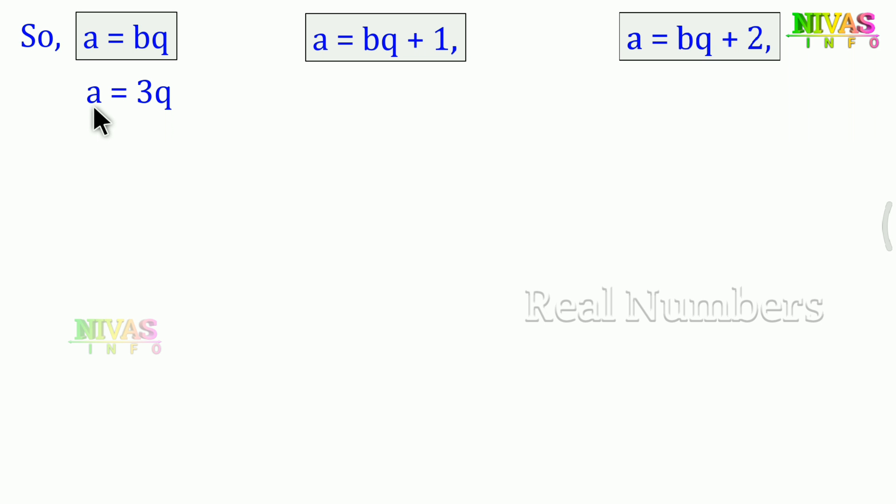Since we need a³, we cube both sides: a³ = (3q)³. Expanding this bracket, we get a³ = 27q³. We can write 27q³ as 3×9q³. Separating out the 9, we get a³ = 9(3q³).